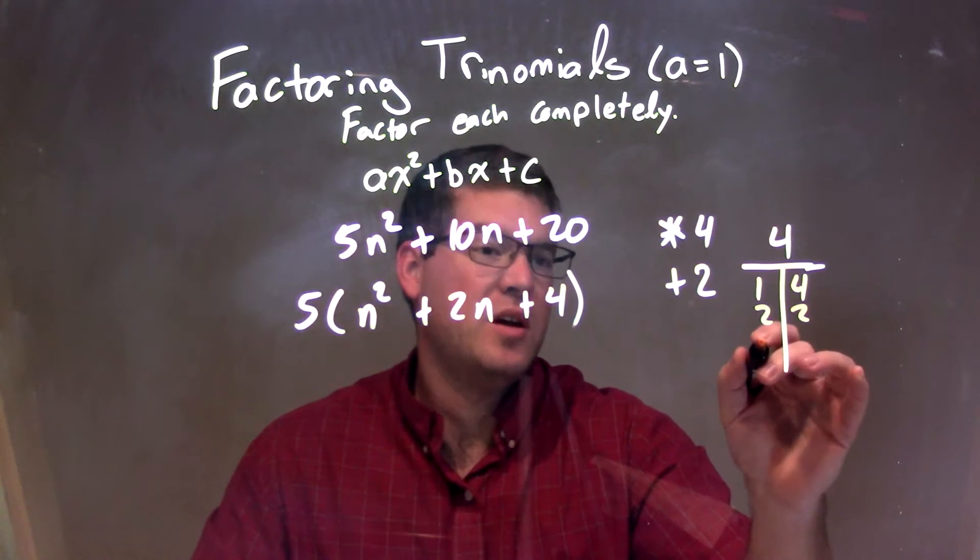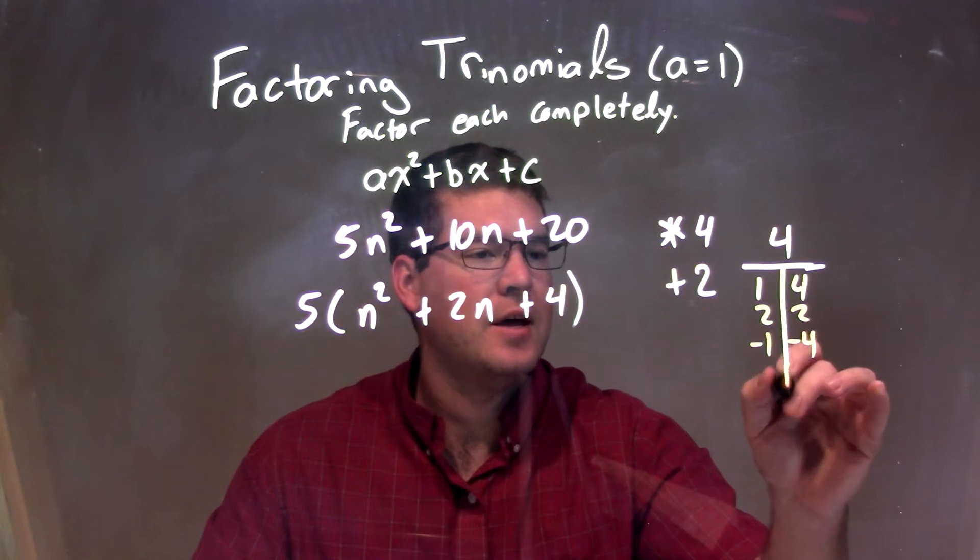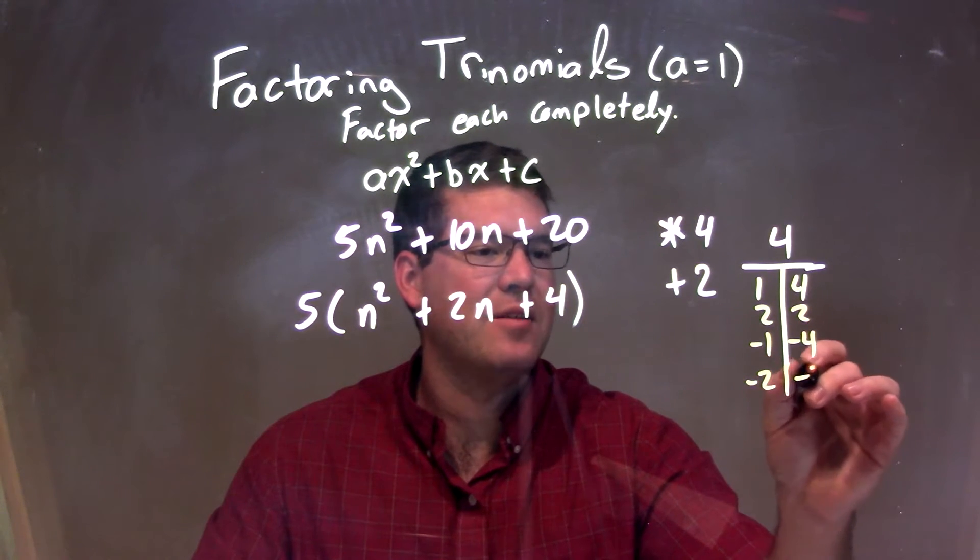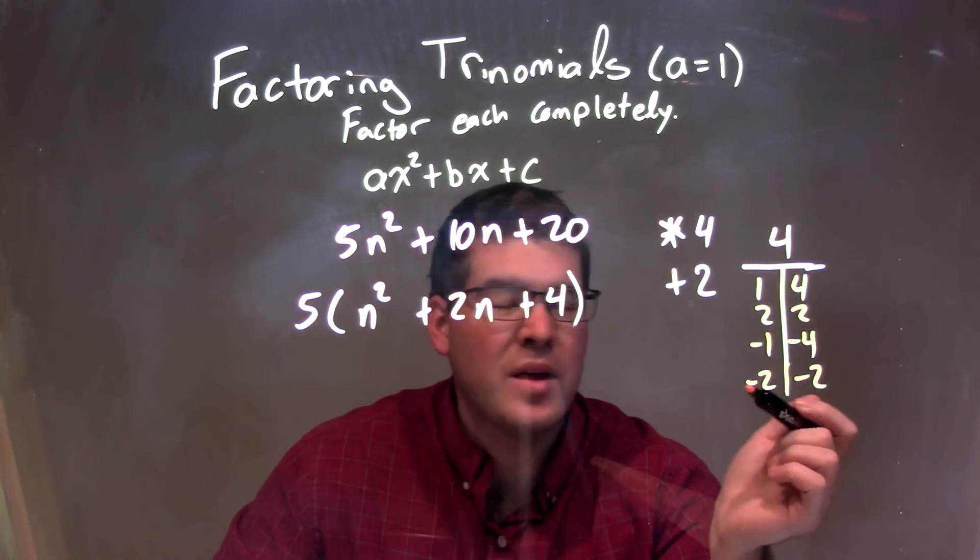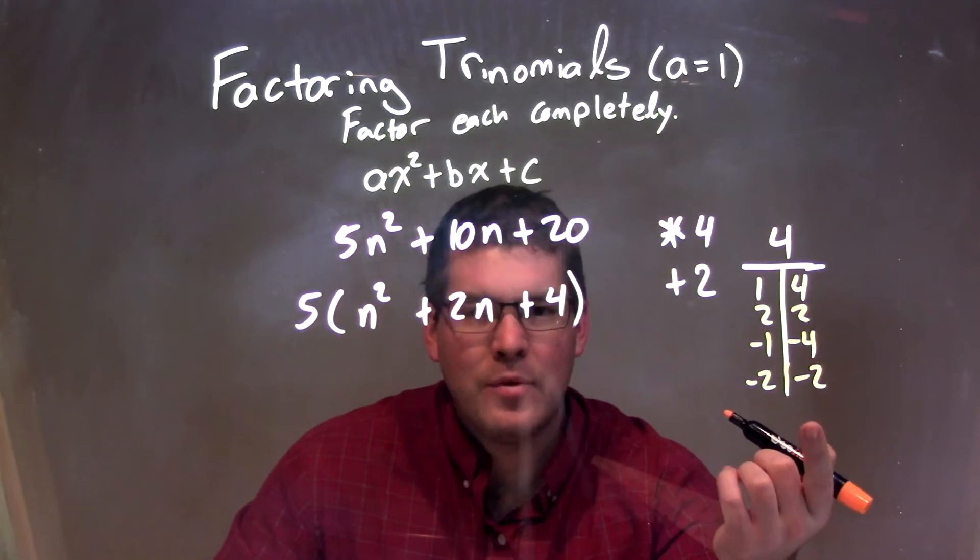What about negatives, right? Negative 1 and negative 4, and negative 2 and negative 2, right? They both multiply. All these multiply to be a 4. So those are all the combinations of two numbers that multiply to be a 4.